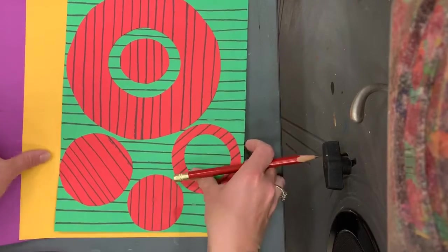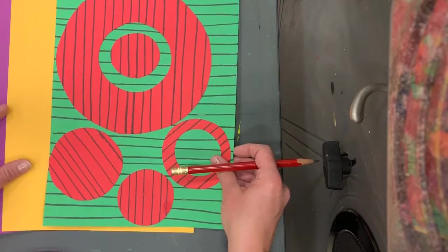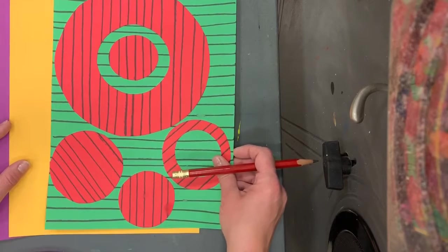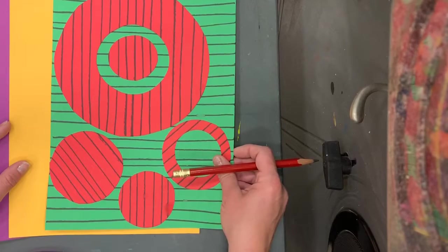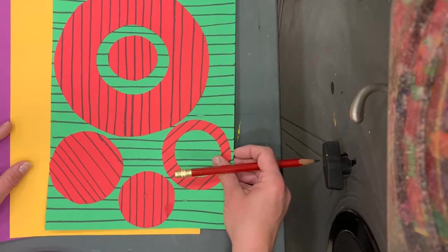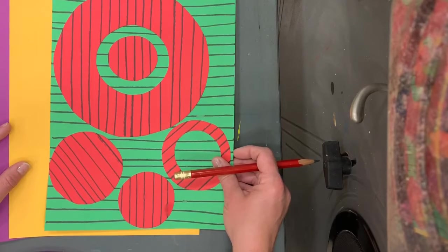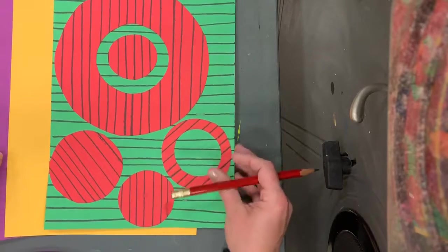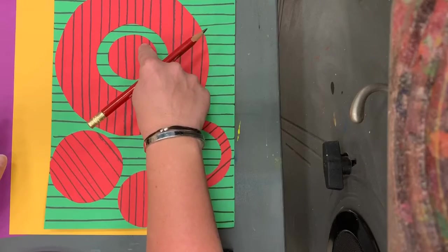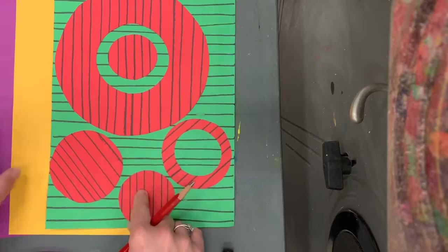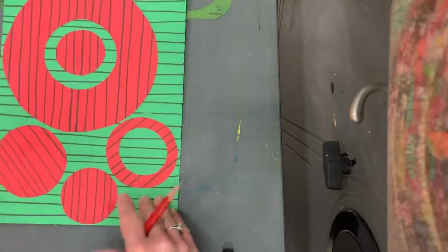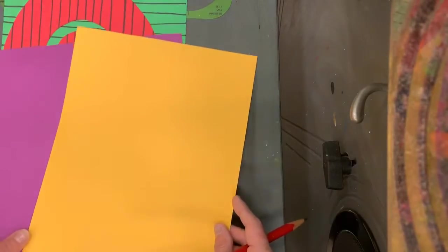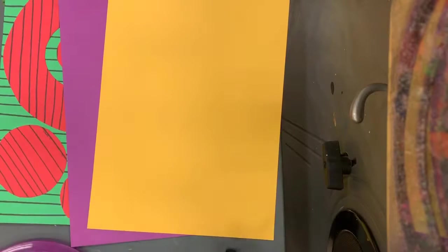We're also going to be working with complementary colors today. If you don't know what complementary colors are, these are colors that are across from each other on the color wheel. So if you look above my board you will see my color wheel. At the very top of the color wheel is yellow and at the very bottom is purple, which is why I have these two colors because I'm going to use complementary colors today.